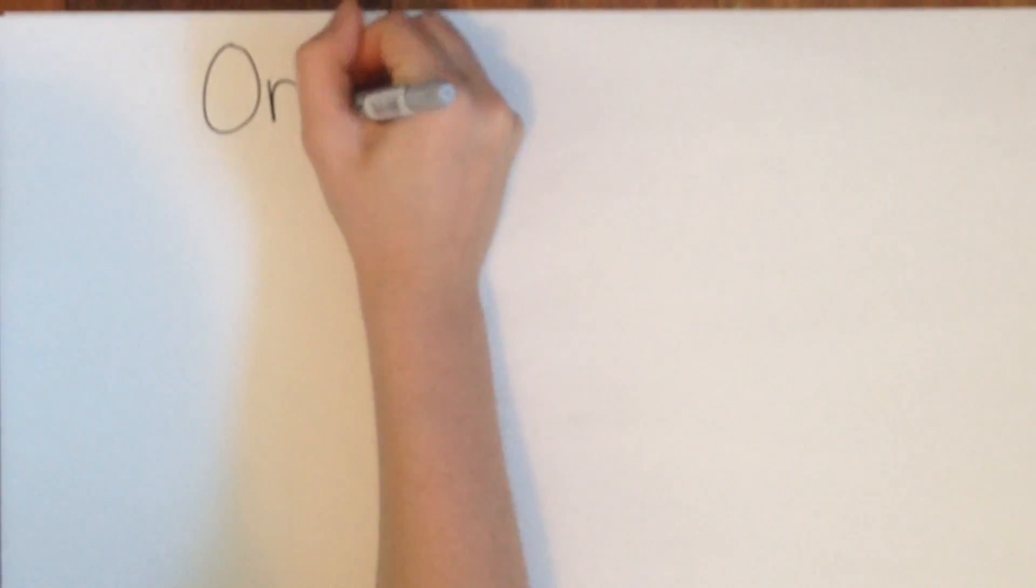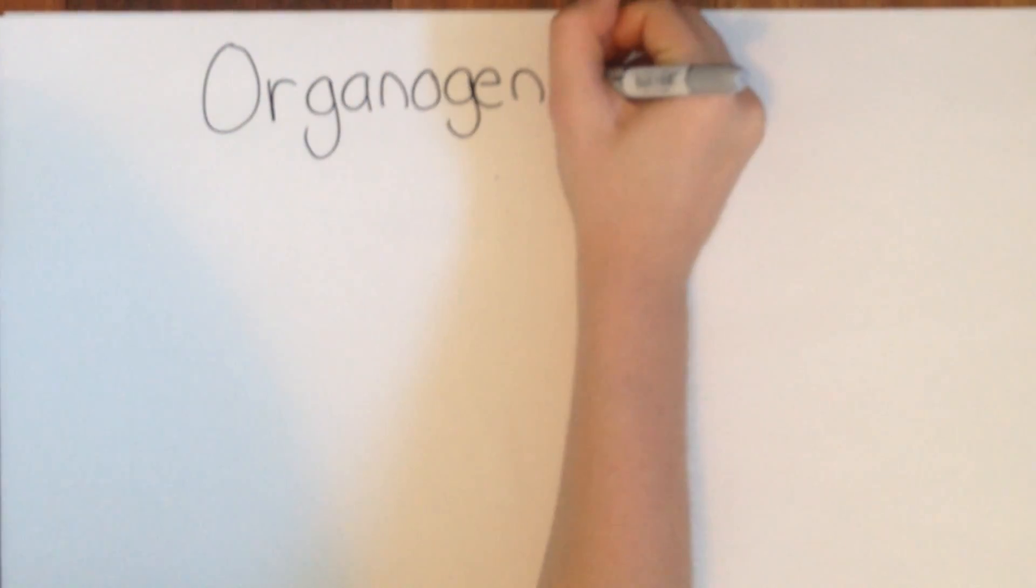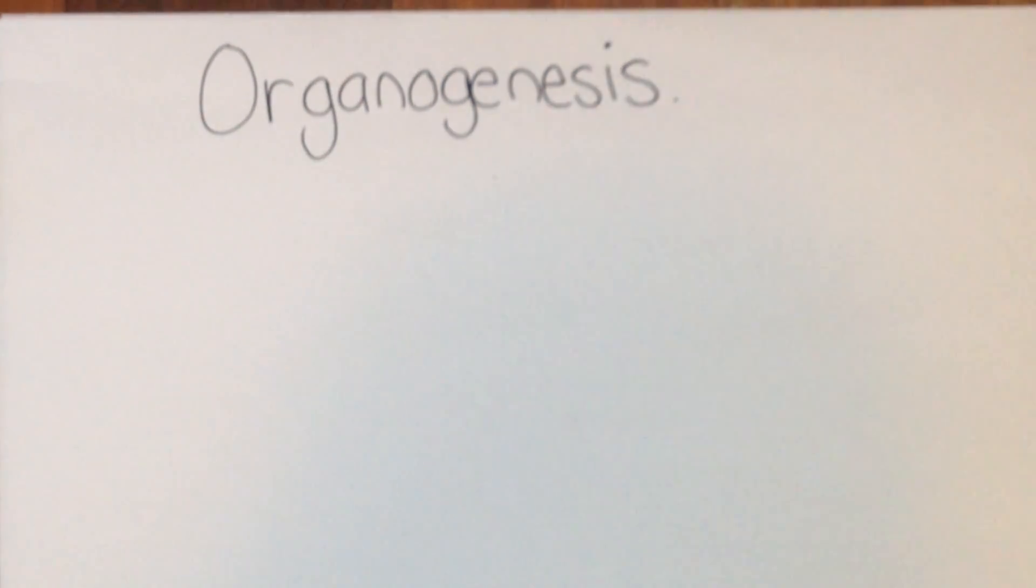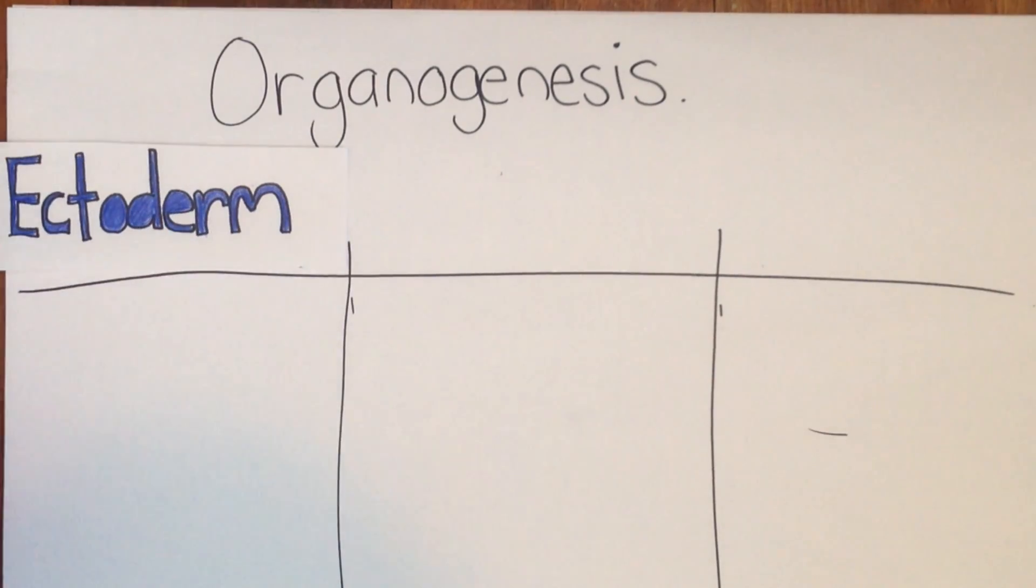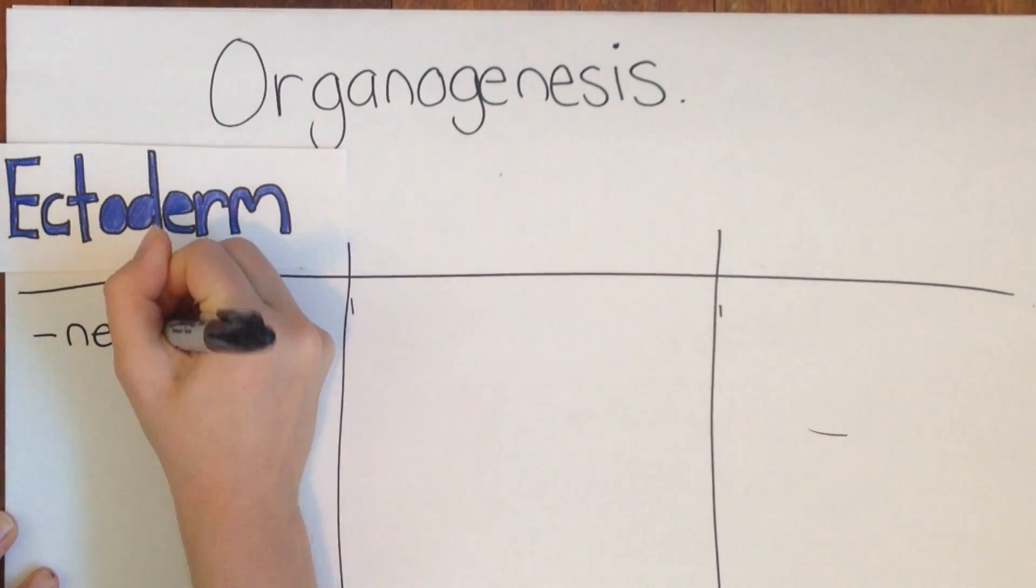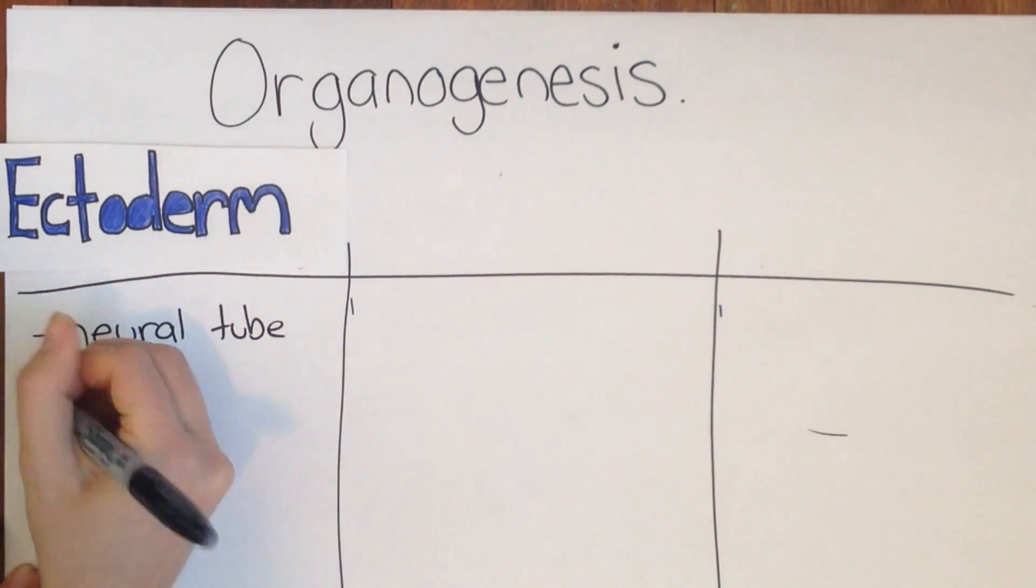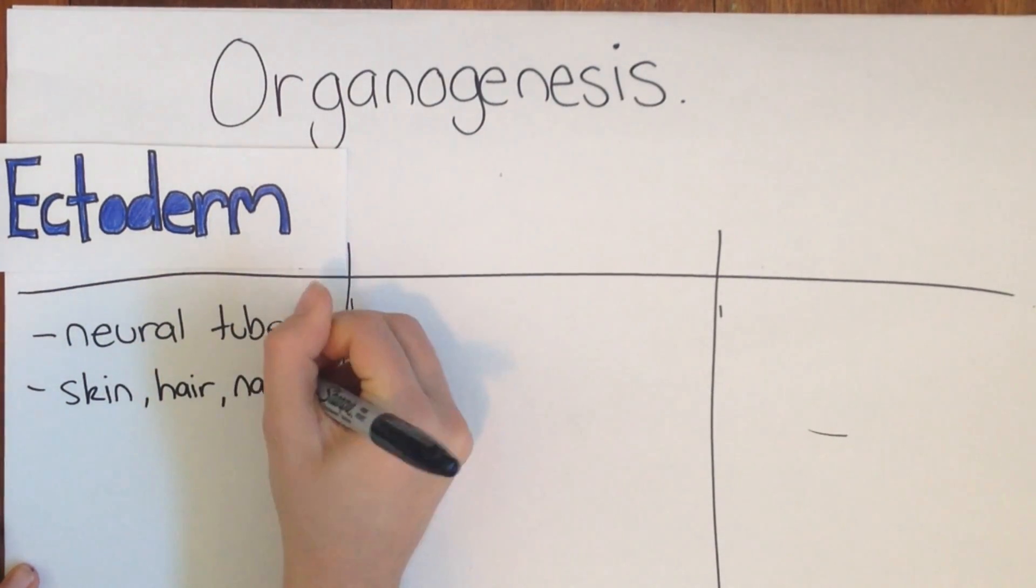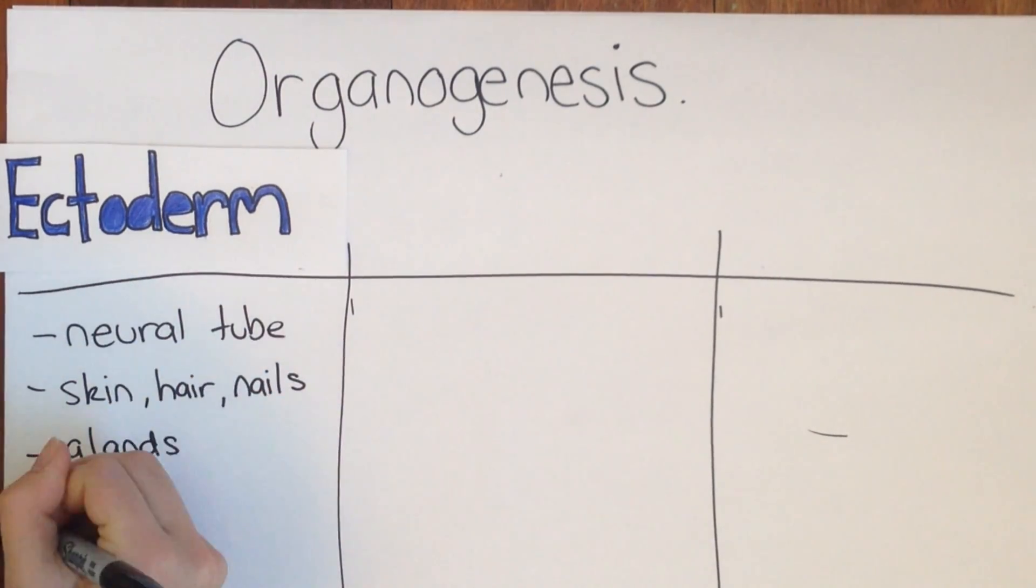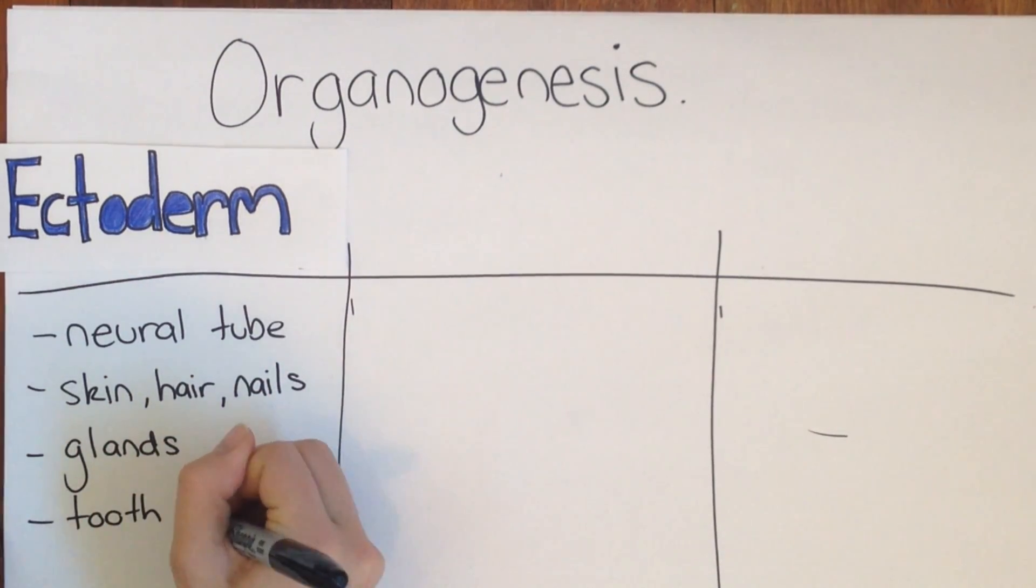Organogenesis also occurs during the fourth week. This is where specific tissues and systems are beginning to differentiate from the trilaminar embryo. The neural tube, from which the embryo's brain, spinal cord and nerves will come from, are starting to develop in the top layer called the ectoderm. This layer will also give rise to the skin, hair, nails, mammary and sweat glands, and tooth enamel.